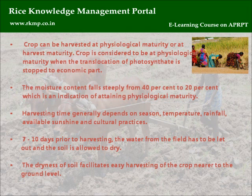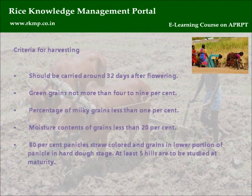Seven to ten days prior to harvesting, the water from the field has to be let out and the soil is allowed to dry. The dryness of the soil facilitates easy harvesting of the crop nearer to the ground level. Criteria for harvesting: should be carried out around 32 days after flowering; green grains not more than 4 to 9%; percentage of milky grains less than 1%; moisture content of grains less than 20%; 80% panicle straw-colored and grains in lower portion of panicle in hard-dough stage; at least 5 hills are to be studied at maturity.